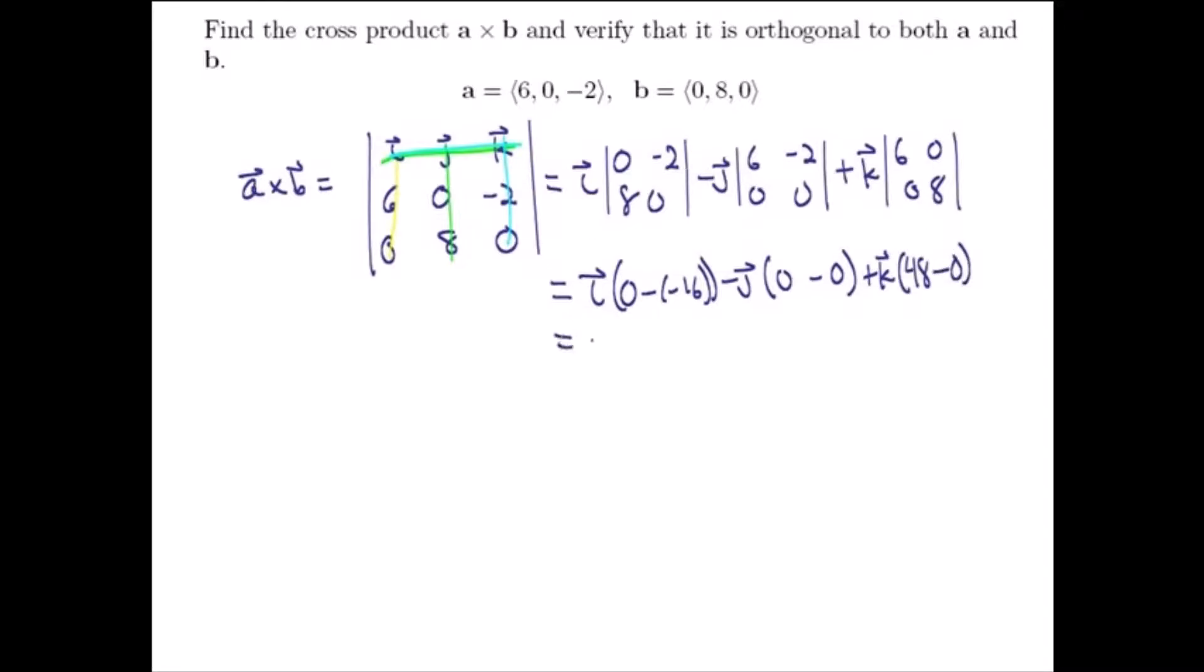So our vector is negative negative is a positive 16 times I plus 0J, so no second component, plus 48K. So 16I plus 48K, or if you like, in component form, we can write that as 16, 0, 48. I should say we don't have no second component, we just have a second component of 0.